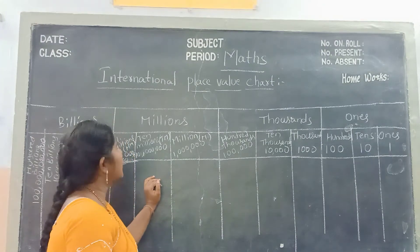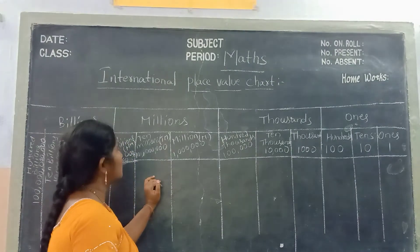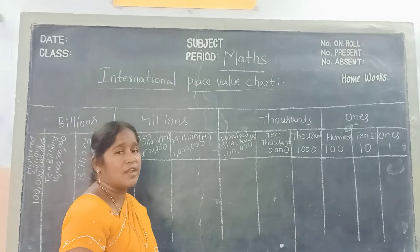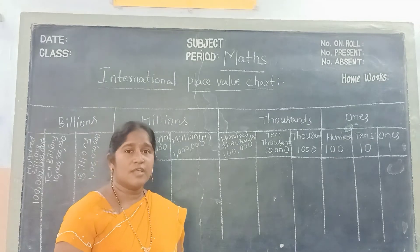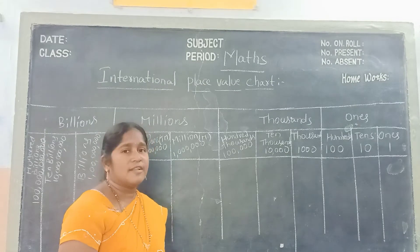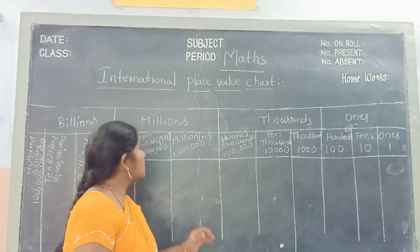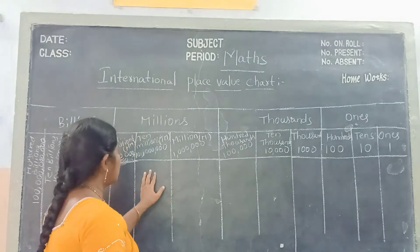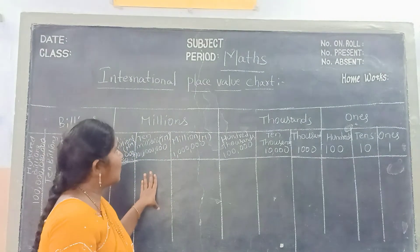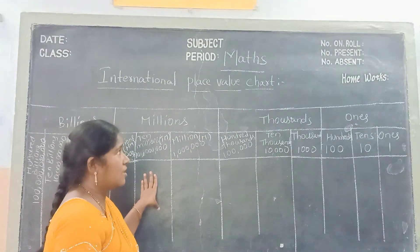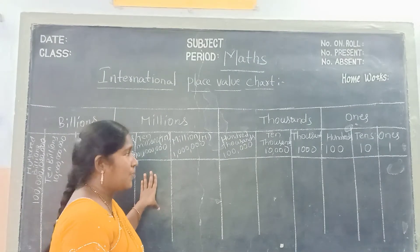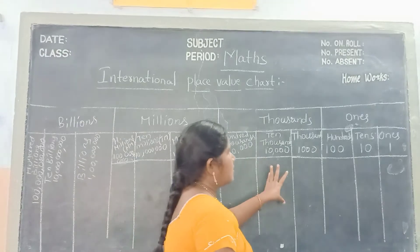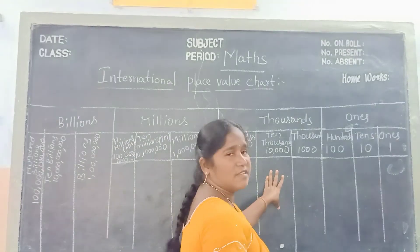What is the International Place Values Chart? In this International Place Values Chart, so many countries are used. In this International Place Values Chart we are dividing — it is separated by periods.